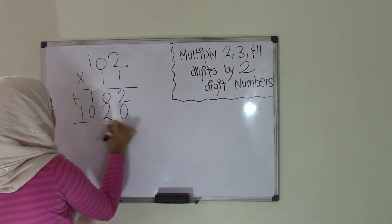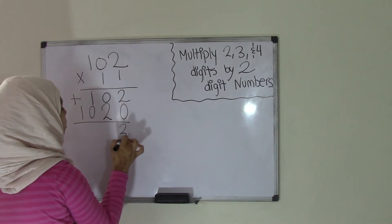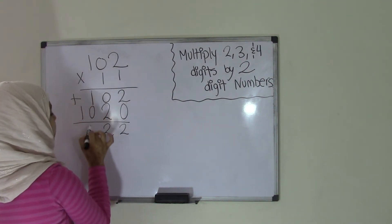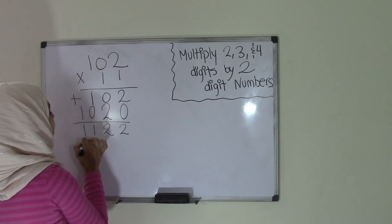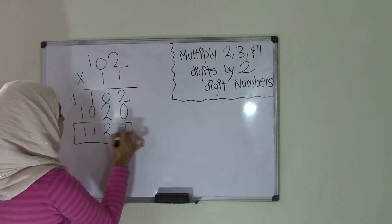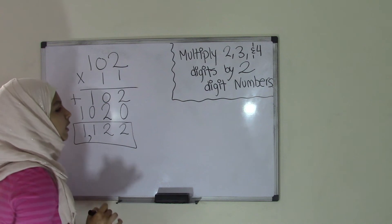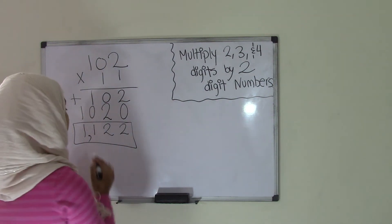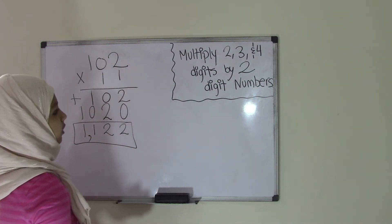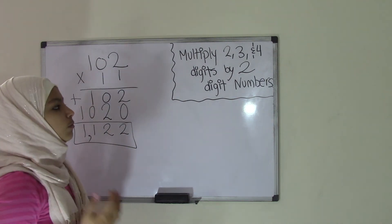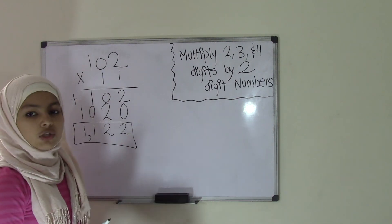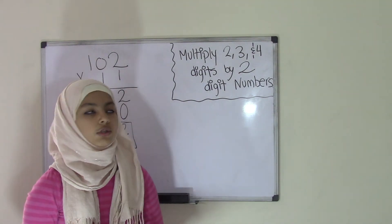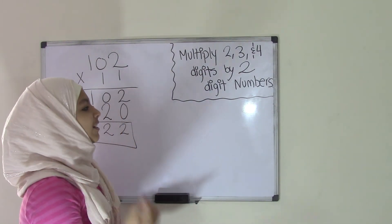Add the two products together. 2 plus 0 is 2. 0 plus 2 is 2. 1 plus 0 is 1. And then bring down that 1. You get your product of 1,122. That means 102 times 11 equals 1,122. So now we're done with multiplying a 2-digit number by a 2-digit number and also multiplying a 3-digit number by a 2-digit number.